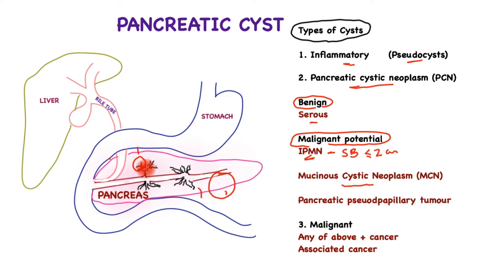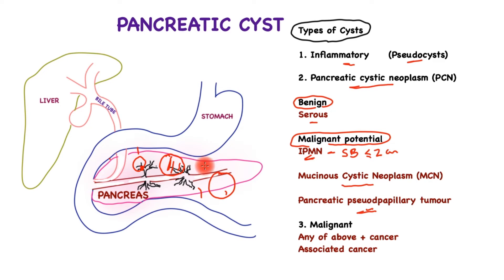Mucinous cystic neoplasm is a cyst that forms within the pancreas, more commonly in women, and has significant malignant potential. It is typically not connected to the pancreatic ductal system and contains mucin. When diagnosed and if the patient is fit for surgery, removal is the best treatment. Finally, pancreatic pseudopapillary tumors are solid tumors that tend to occur in women in their 30s, have a low malignant potential, and need to be removed once discovered.